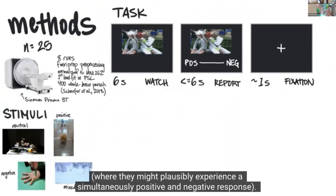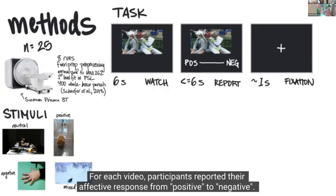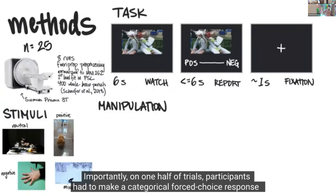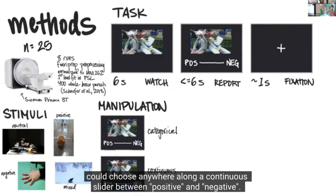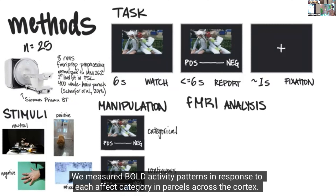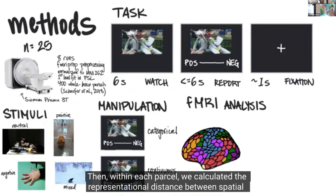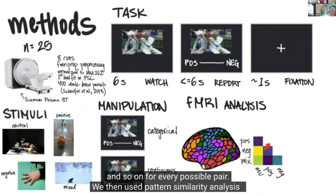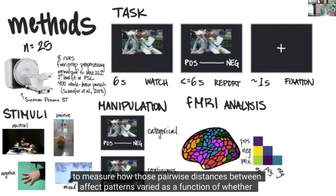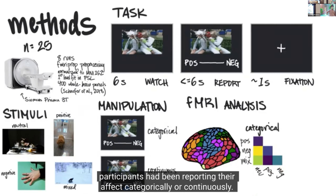We investigated this by recruiting 25 young adults to report their affective response to a series of short videos during fMRI scanning. Participants watched seven-second videos designed to elicit four types of affect — neutral, positive, negative, and mixed. For each video, participants reported their affective response from positive to negative. Importantly, on half of trials, participants made a categorical forced-choice response (positive or negative), while on the other half, they chose anywhere along a continuous slider. We measured BOLD activity patterns in response to each affect category across cortical parcels, then calculated representational distance between spatial activity patterns for each pair of affect types.